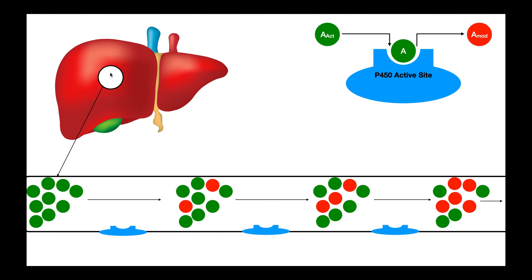We're zooming in here at one part of the liver inside hepatocytes. The green dots represent the drug in its active form — when I say A active, this is when the drug is active. Here we have the cytochrome P450 enzyme, showing its active site. P450 enzymes either totally or partially inactivate the drug. When this active form of drug A comes into the active site, it's chemically modified by the P450 — we'll call that A modified — and the drug becomes either partially or totally inactivated. For our purposes, we can think of total inactivation: active drug reacts with the P450 and becomes inactive.